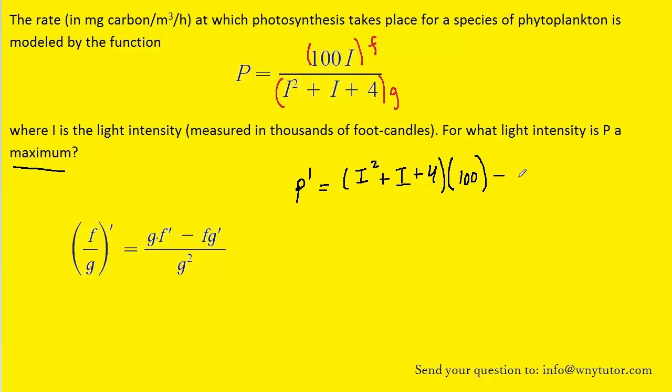The f function, which is the top function again, multiplied by g prime, which is the derivative of the bottom. Now the derivative of the bottom would just be 2I plus 1. Notice the derivative of this I term is just 1. And then finishing off the quotient rule, we have this all divided by the bottom function squared.